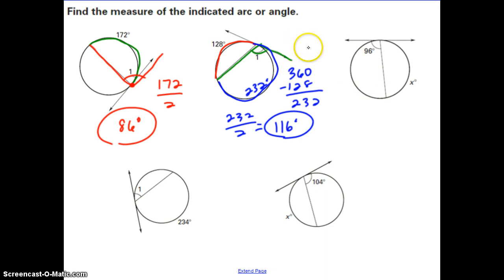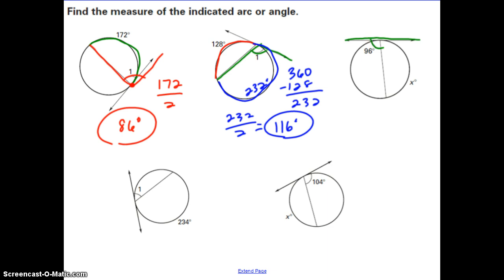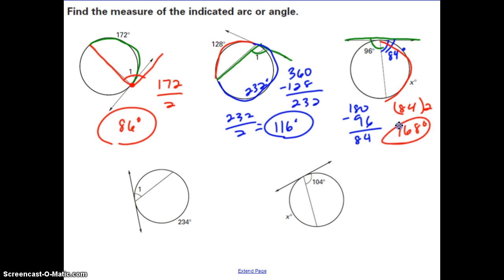This next problem is similar, but I'll solve it differently using the straight line instead of the entire circle. Every line is 180 degrees, and one angle is 96 degrees. So 180 minus 96 leaves 84 degrees for the supplementary angle. Then we find the corresponding arc by multiplying 84 by 2, giving us x equals 168 degrees.